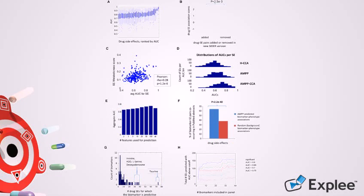Using the ML algorithm for the most predictive side effects, purine, hyaluronan, and salvage pathways are the top predictive reactions.